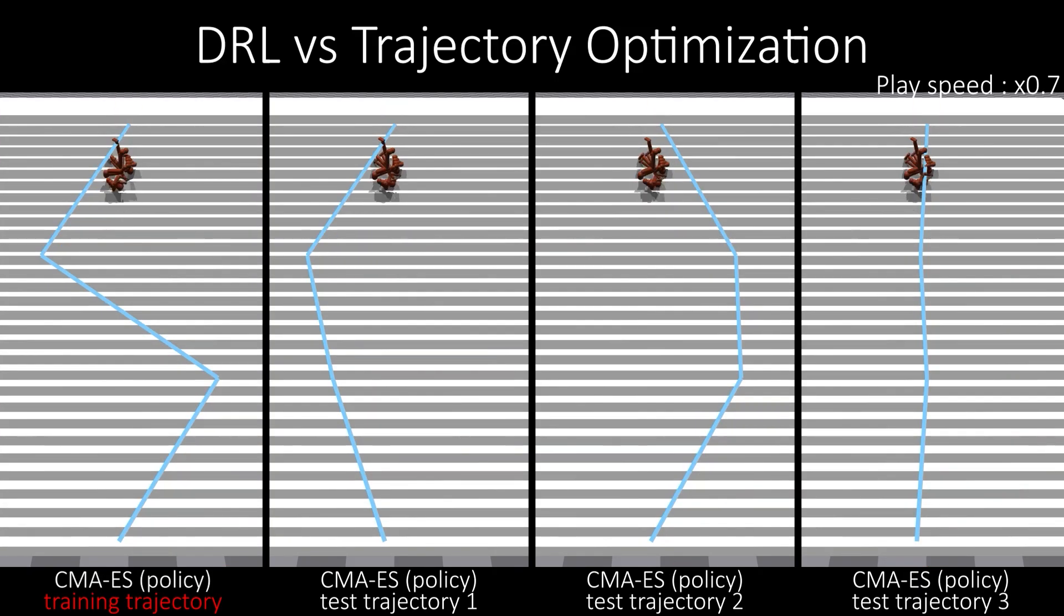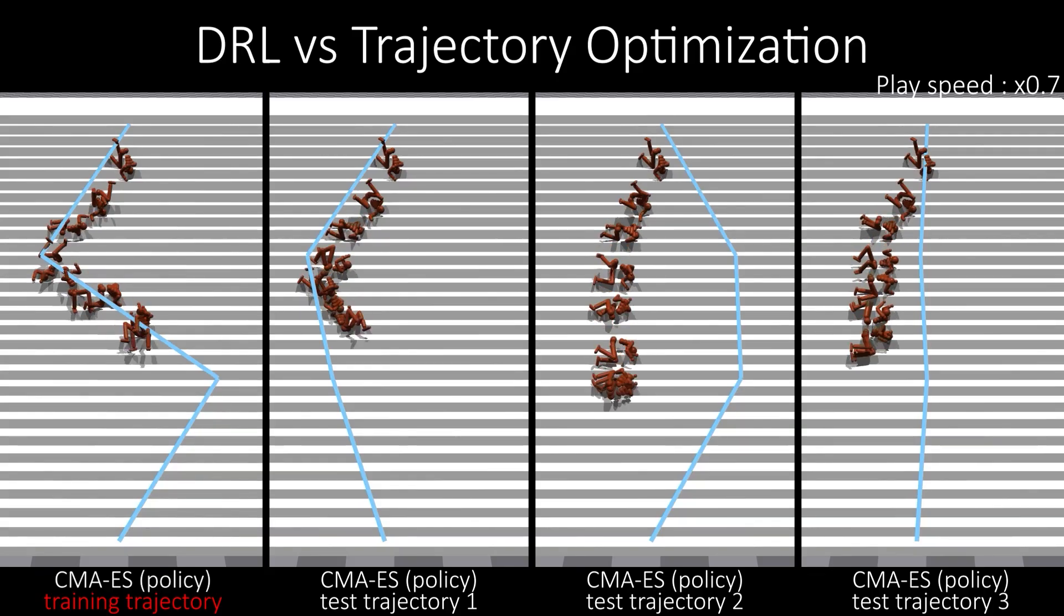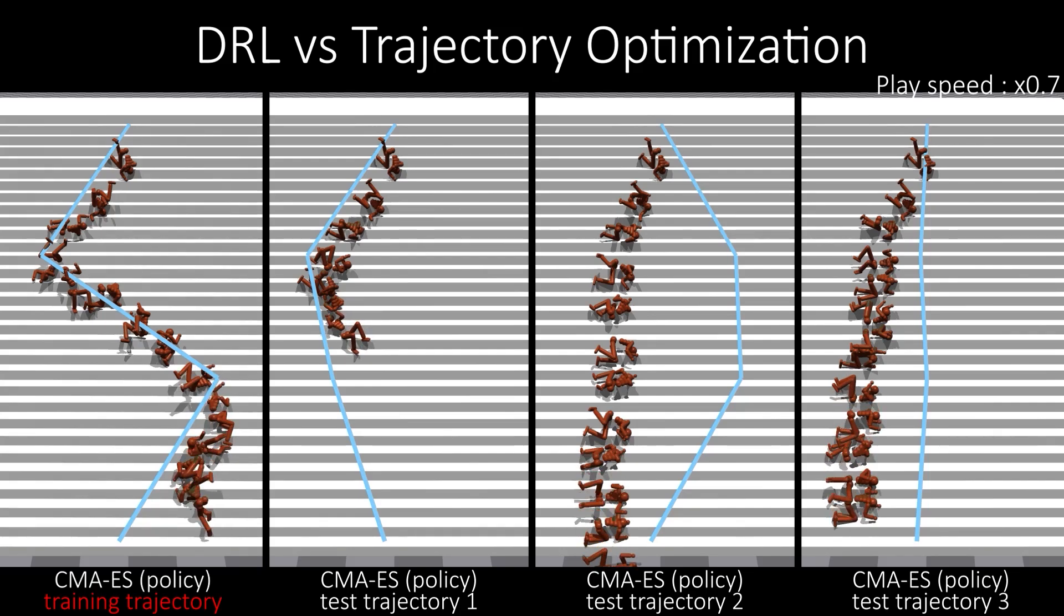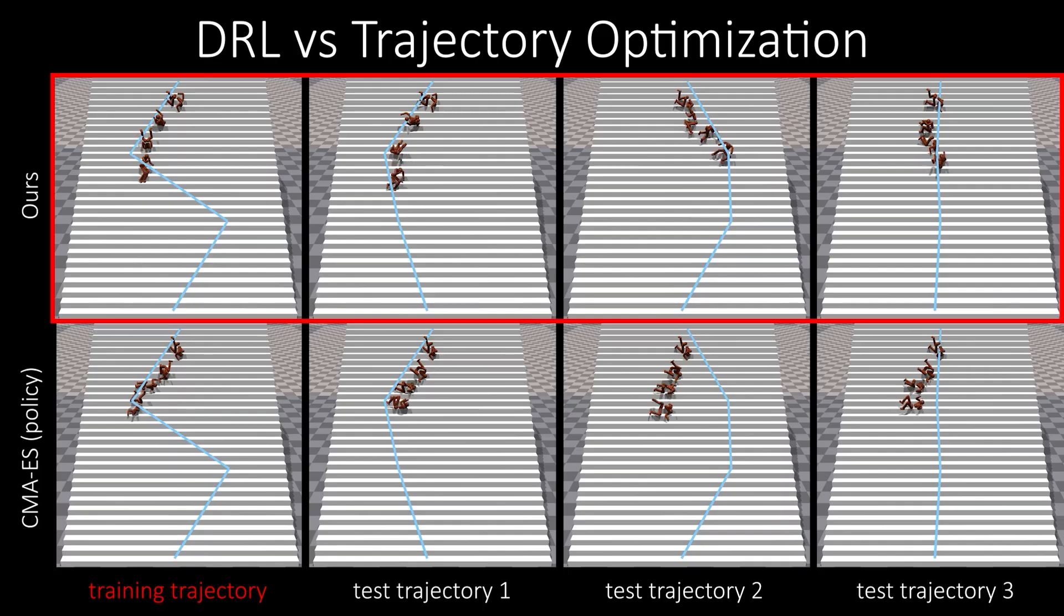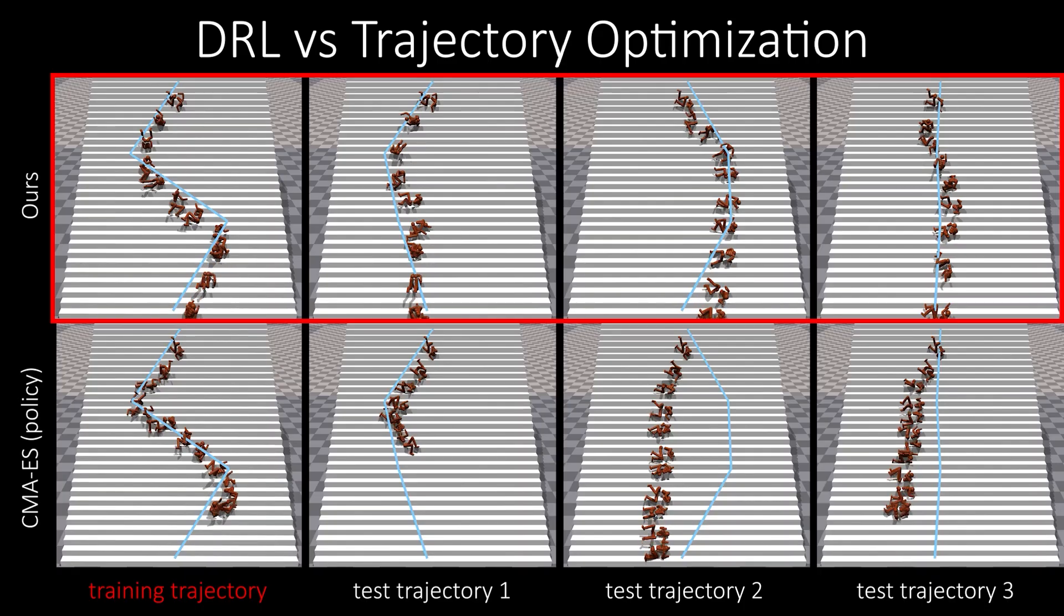In contrast, the CMAES policy fails to adapt to the unseen trajectories, stopping prematurely or deviating significantly from the intended path. This experiment highlights that our DRL policy is not only more effective than the CMAES policy in learning, but also exhibits superior adaptability to unseen environments.